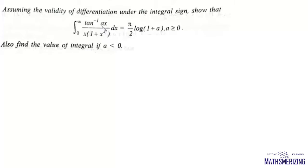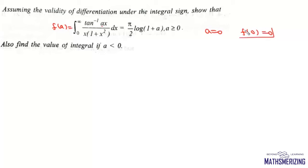Clearly, the parameter here is a and the limits are constant, so this integral will be some function of a. We write this as f(a) equals this integral. When we put a = 0, the integrand becomes 0, so the value of f(0) is 0. This gives us the initial condition: when a = 0, the function value is also 0.